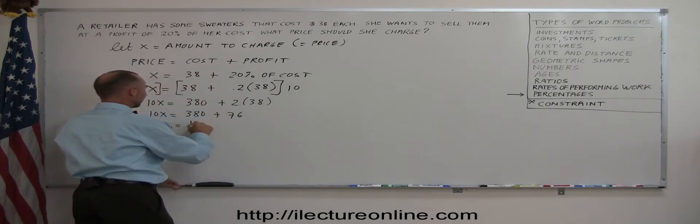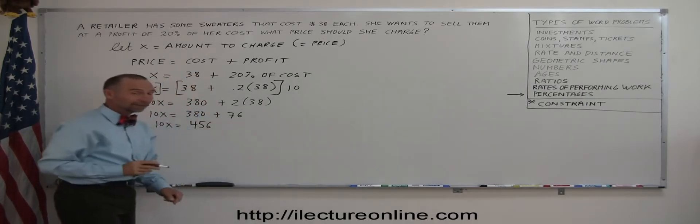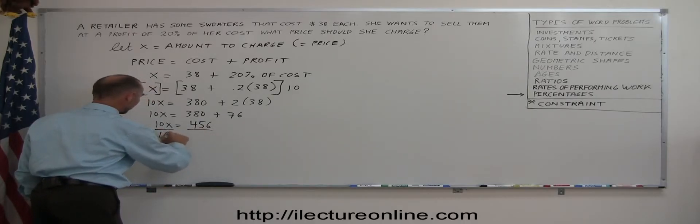And finally, we divide both sides by the numerical coefficient in front of X. That cancels out. We have X equals 45.6.